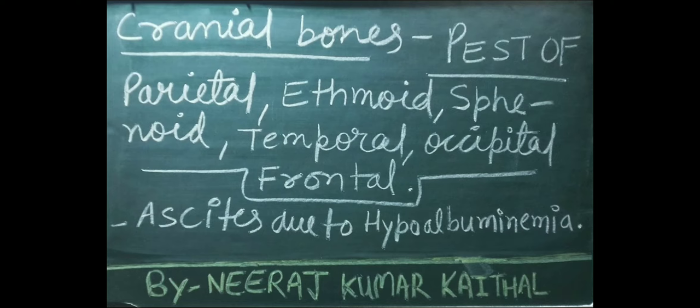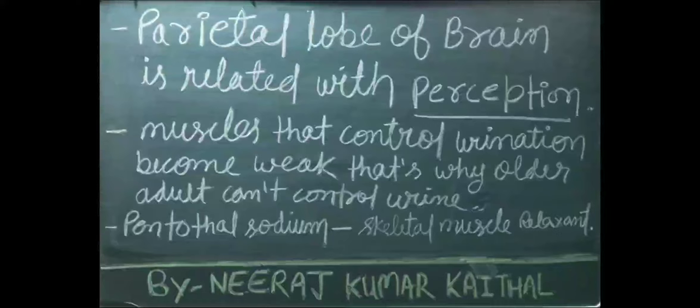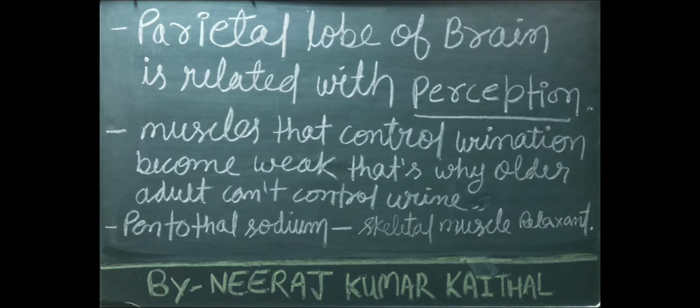Ascites is due to hypoalbuminemia. The parietal lobe of the brain is related to perception. Muscles that control urination become weak in older adults, so they cannot control urine. Pentothal sodium is the drug that works as a skeletal muscle relaxant.